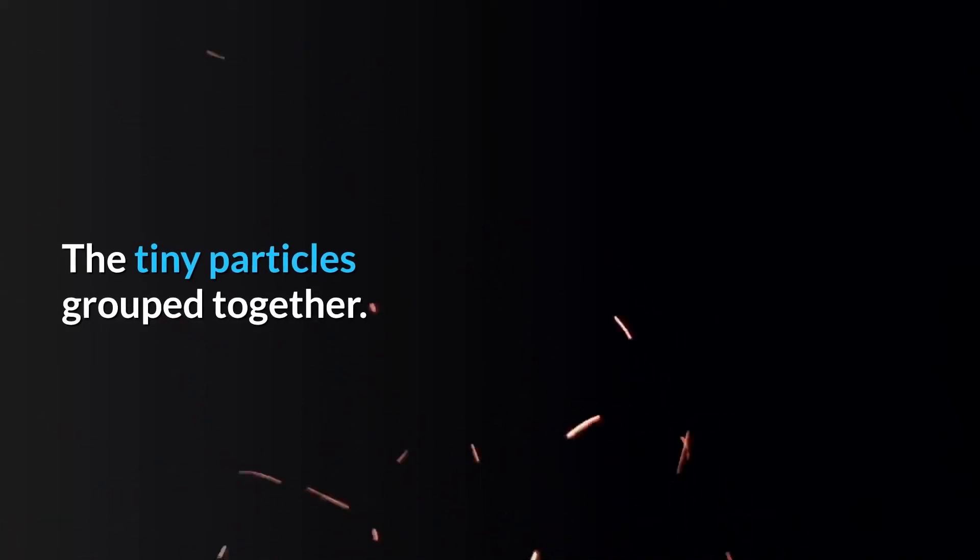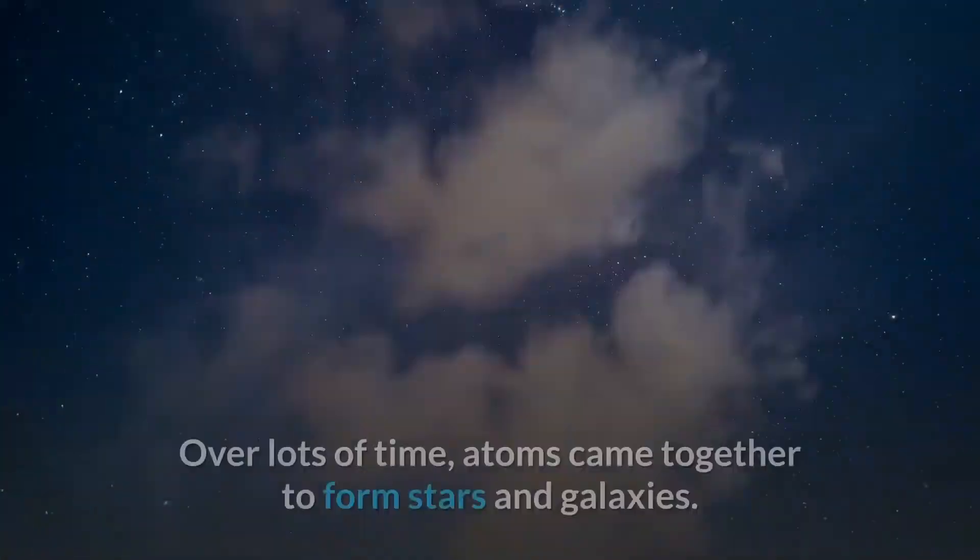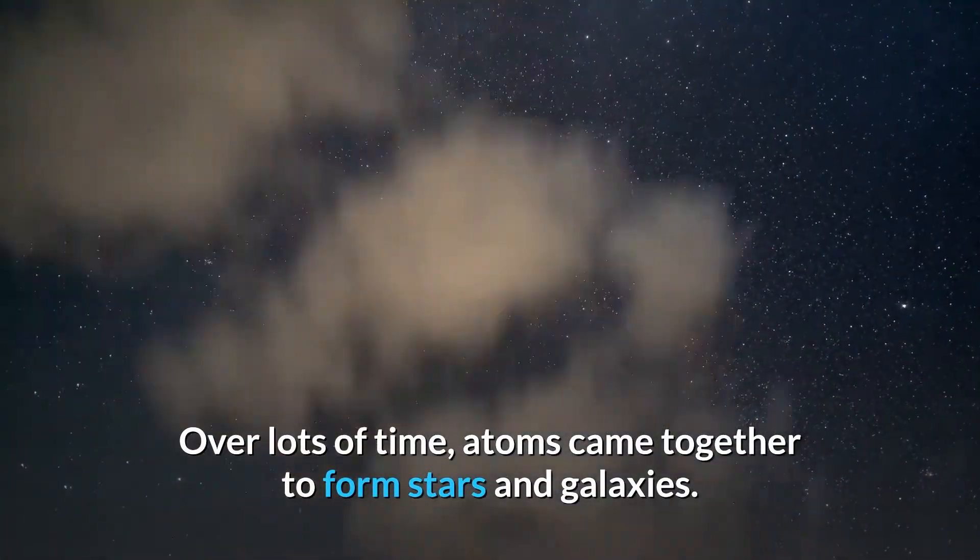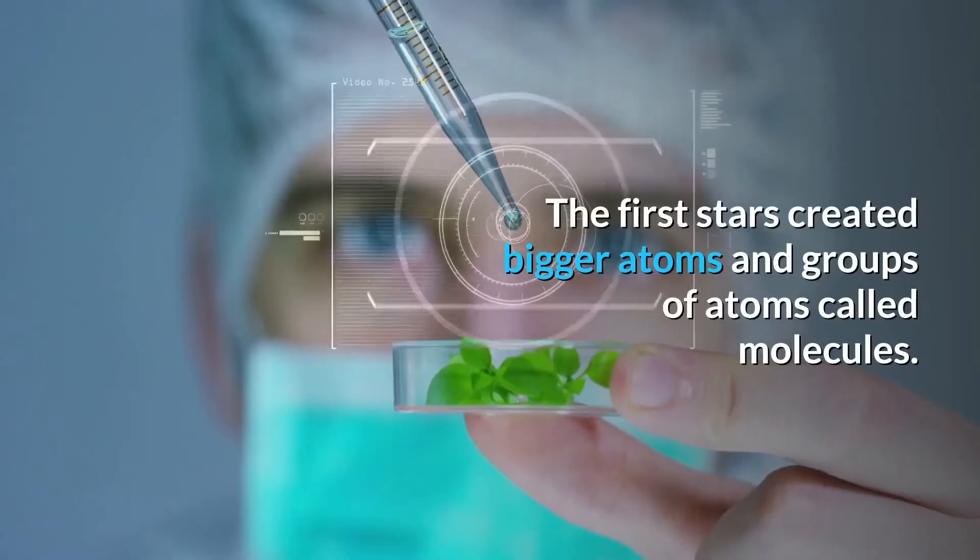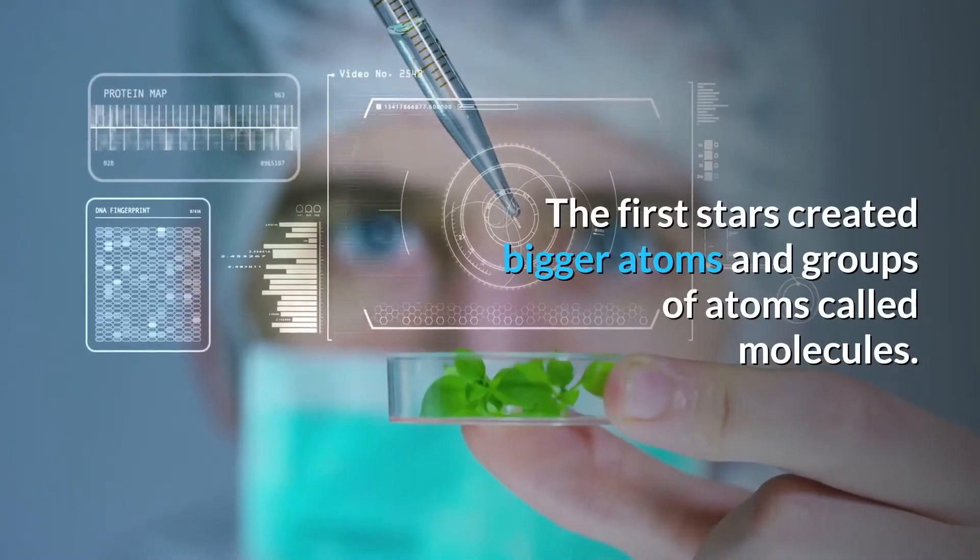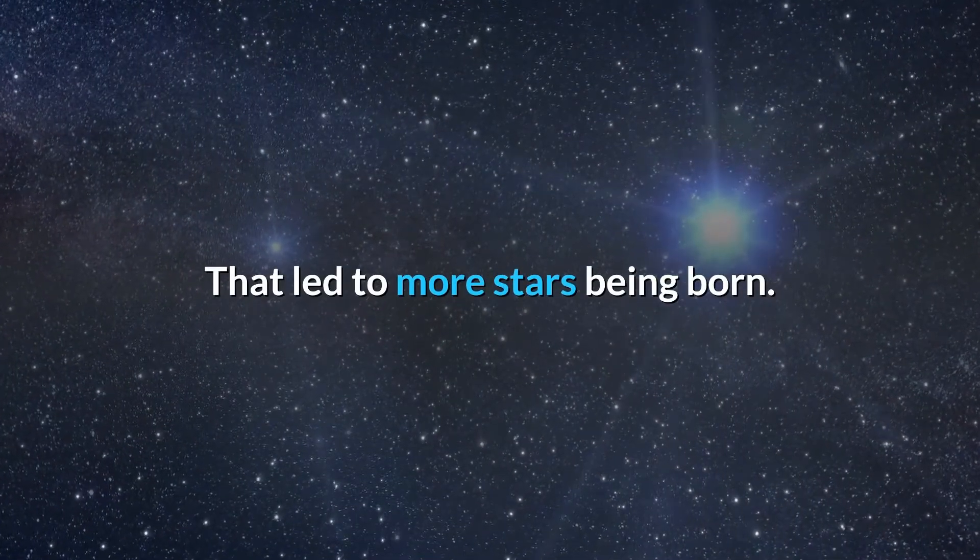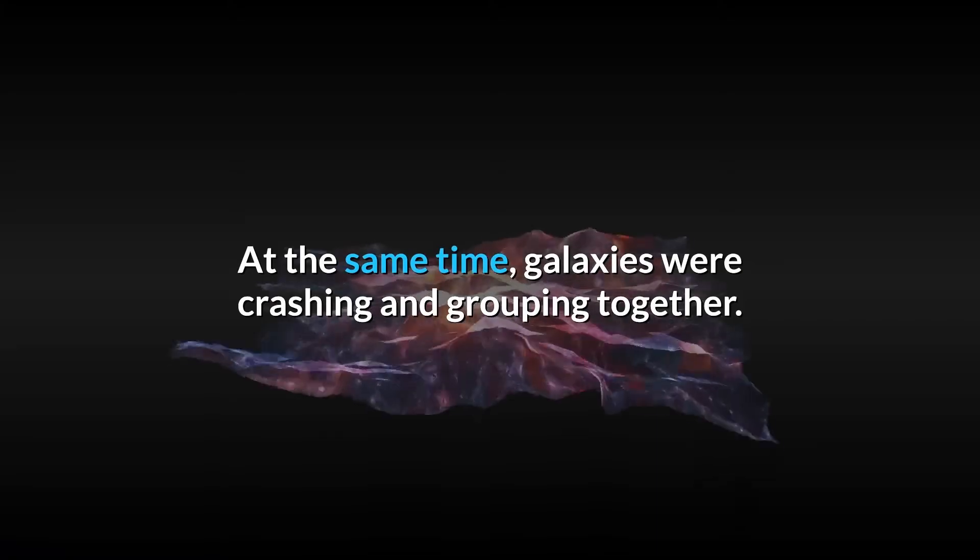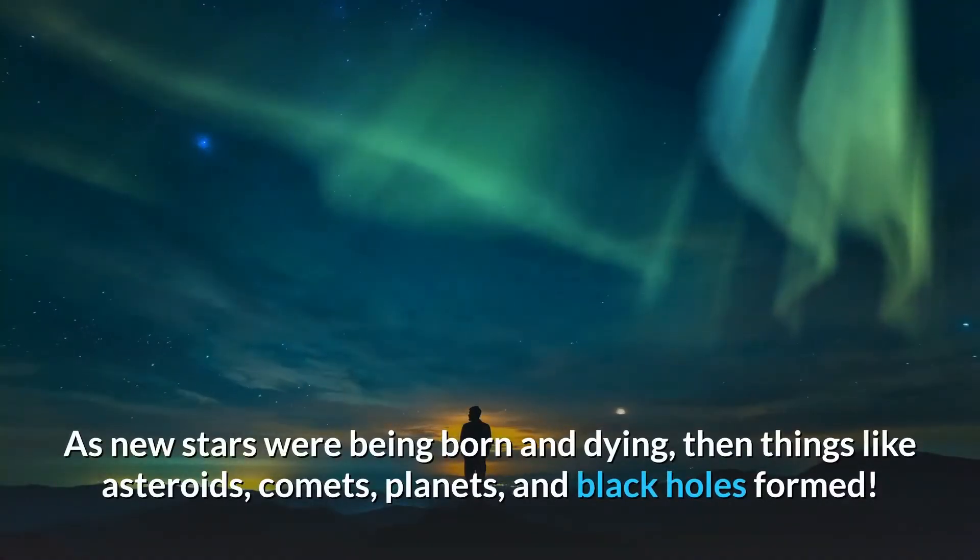Then those atoms grouped together. Over lots of time, atoms came together to form stars and galaxies. The first stars created bigger atoms and groups of atoms called molecules. That led to more stars being born. At the same time, galaxies were crashing and grouping together as new stars were being born and dying. Then things like asteroids, comets, planets, and black holes formed.